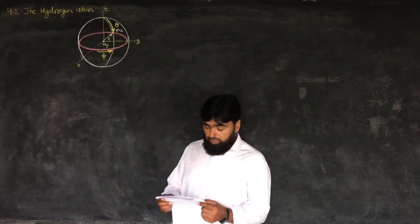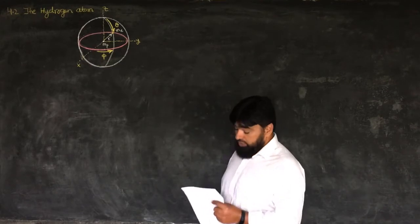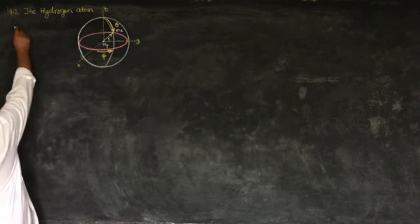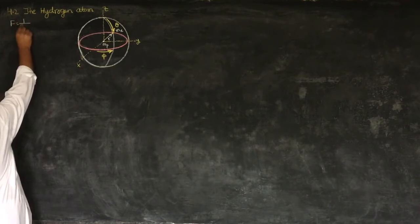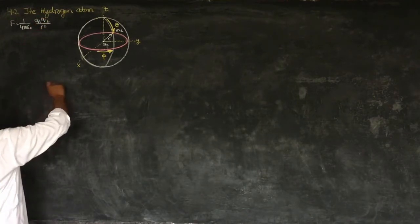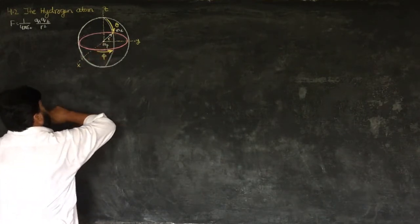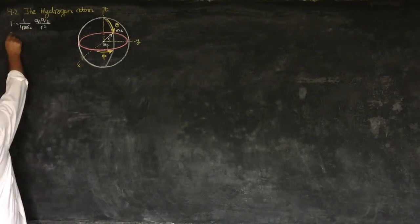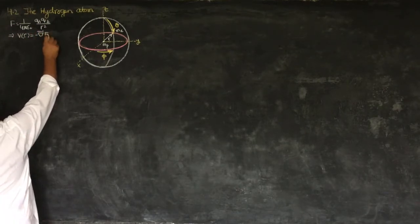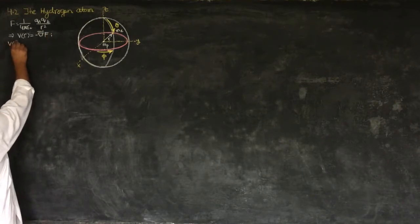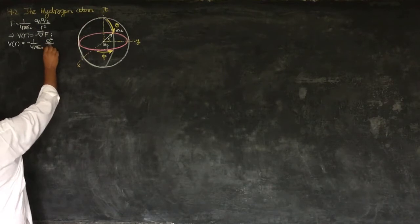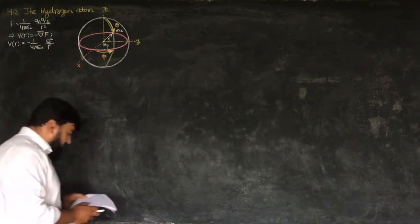In section 4.2 we will start with the hydrogen atom. We will take the Coulombic potential of the hydrogen atom. The Coulombic force is 1 over 4πε₀ times q1·q2 over r², where q1 is the charge on the proton and q2 is the charge on the electron. This gives the potential between electron and proton as minus 1 over 4πε₀ times e² over r, where e is the charge on the electron or proton.